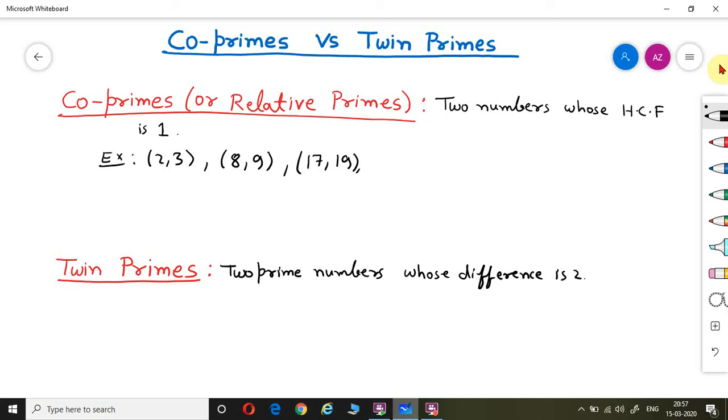What are the examples of twin primes? If we take an example, first example will be 3, 5. The difference between these two prime numbers is exactly 2. Next will be 5, 7. Again difference is 2.